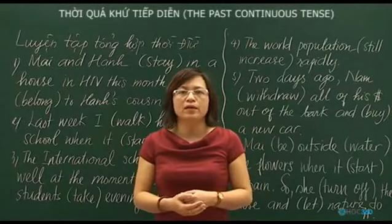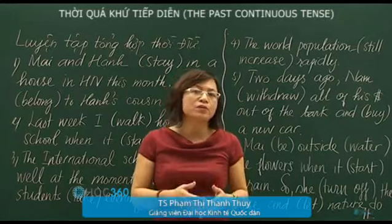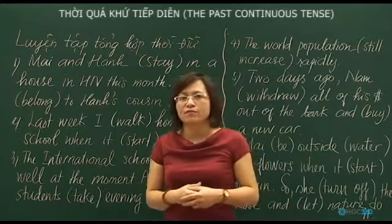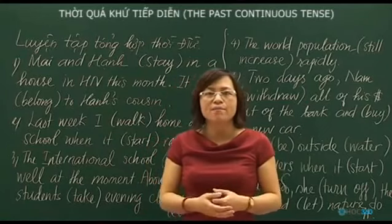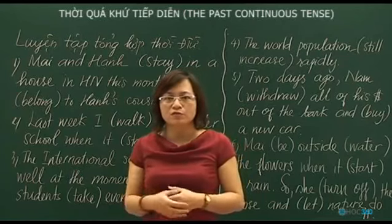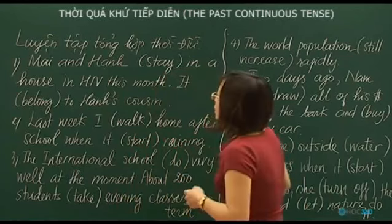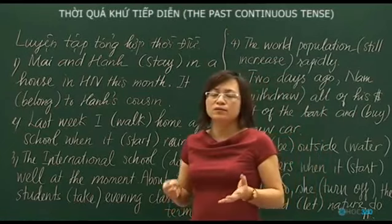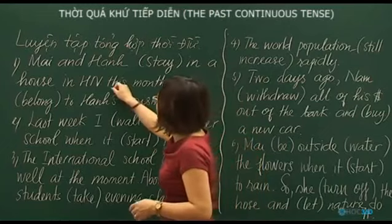In university entrance exams, they do not tell you which tense to use, so the following exercise is a typical example. We use grammar structures to decide how to conjugate each verb. We will do this in 10 minutes. In sentence 1, there is a time clue: 'this month.'